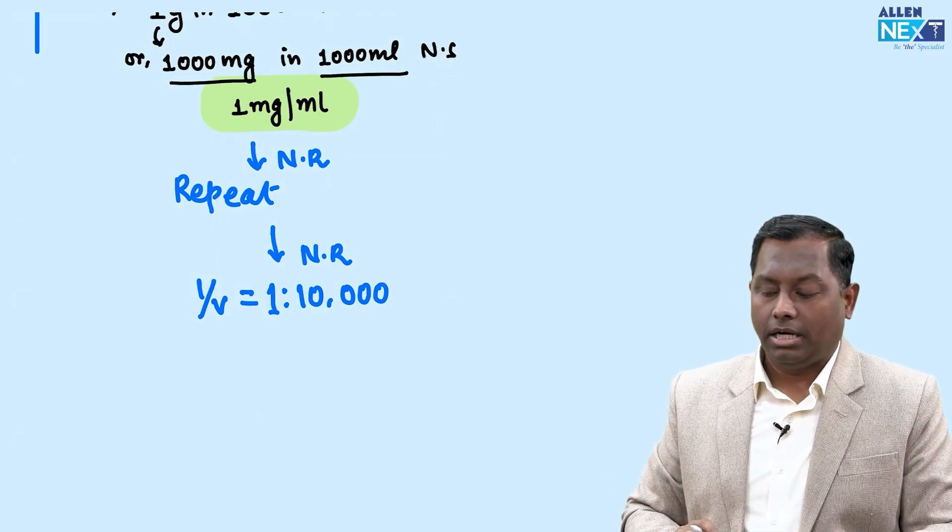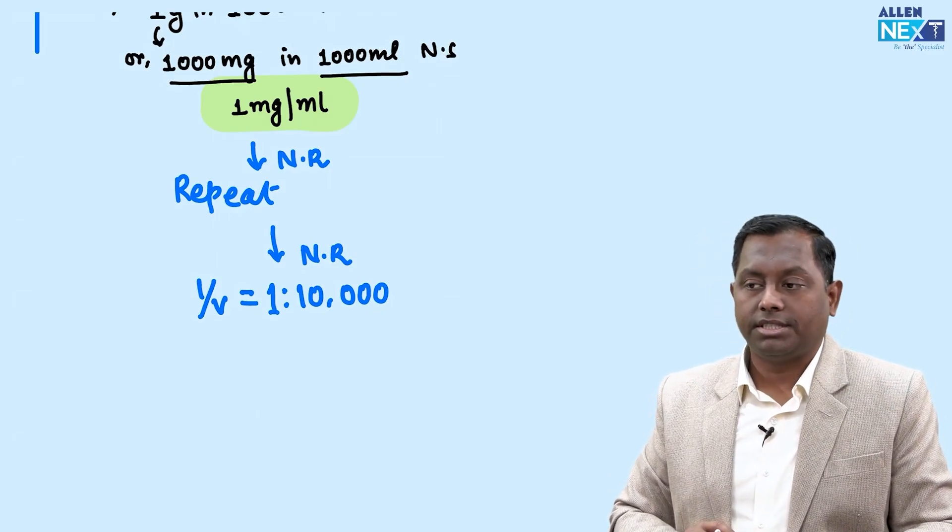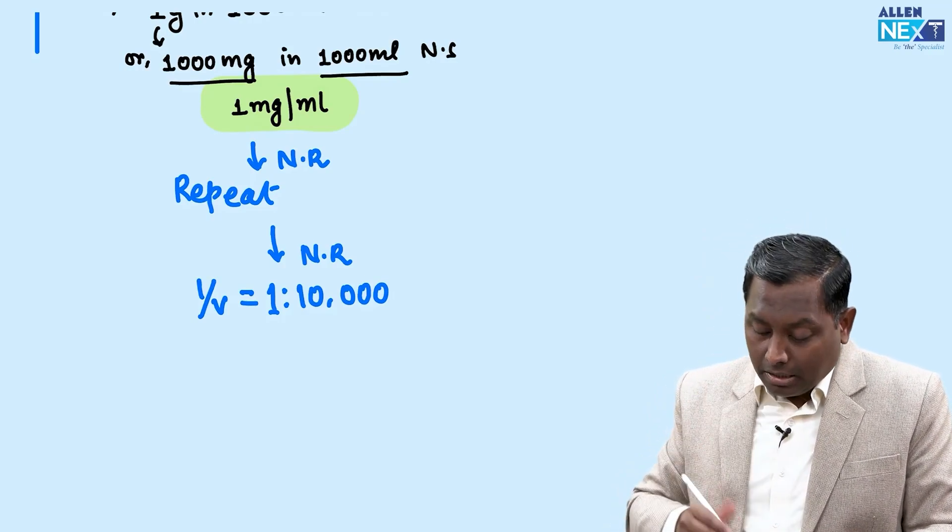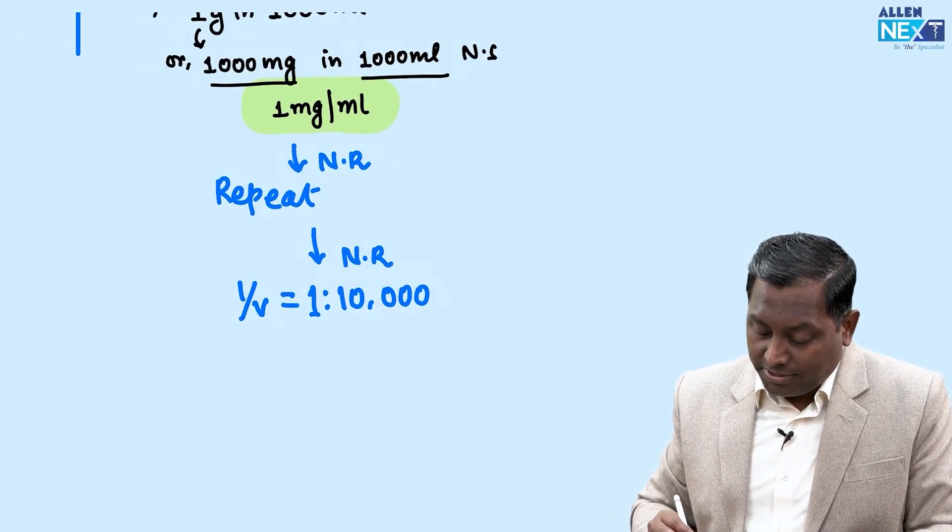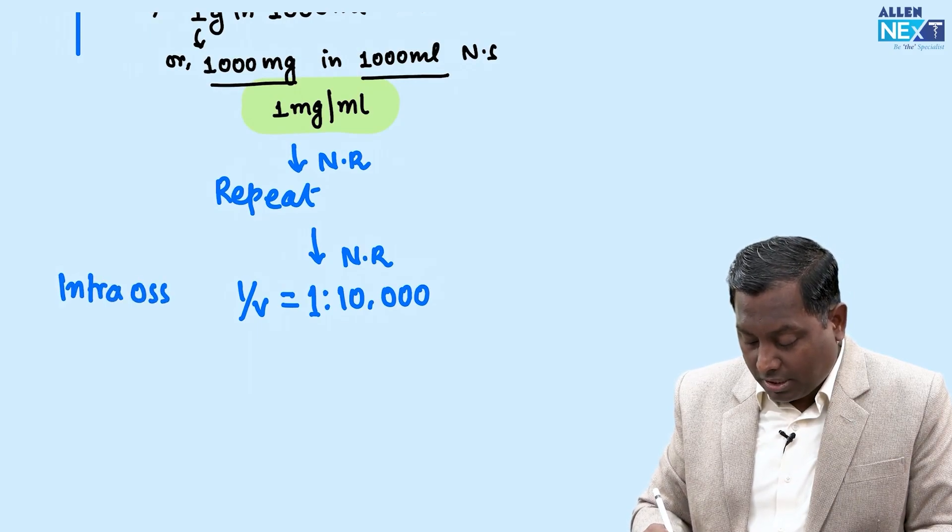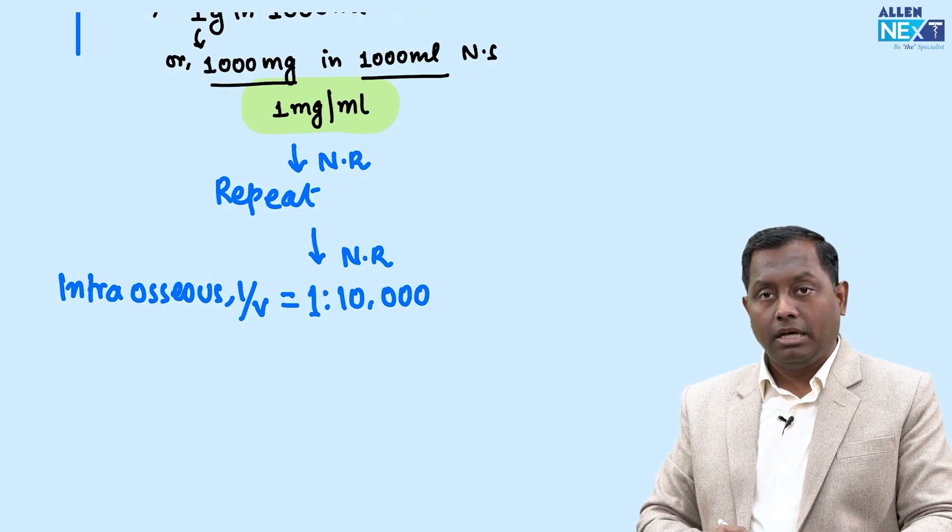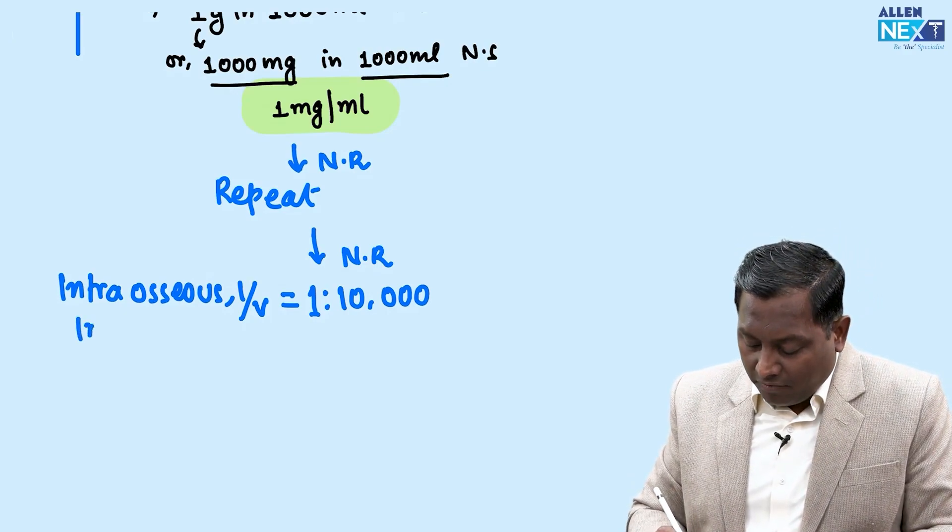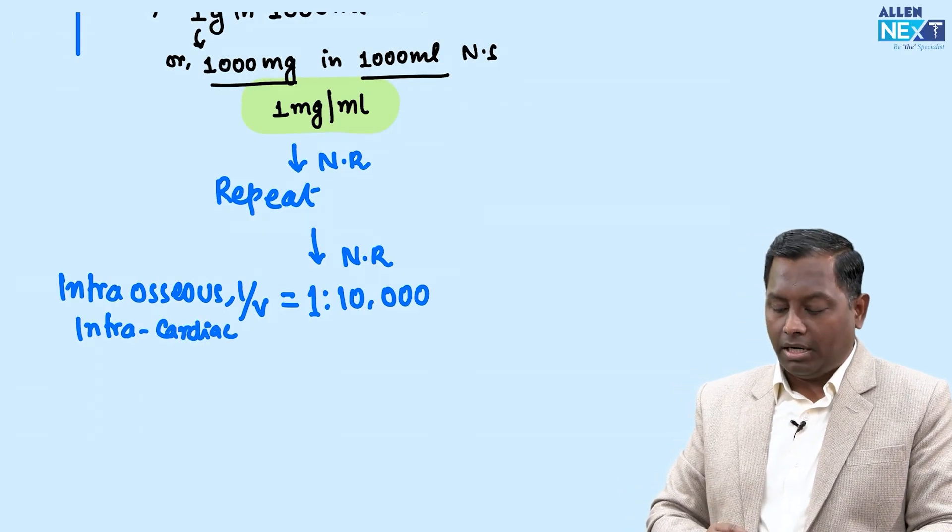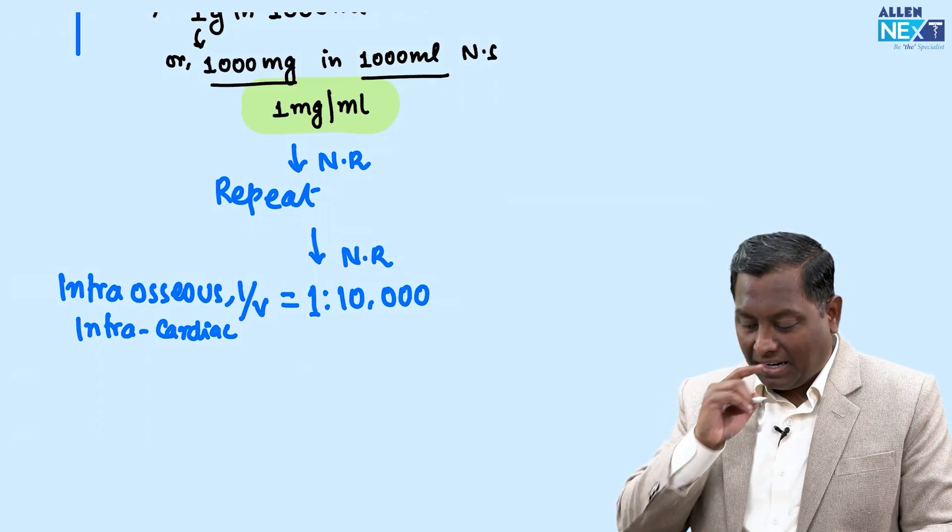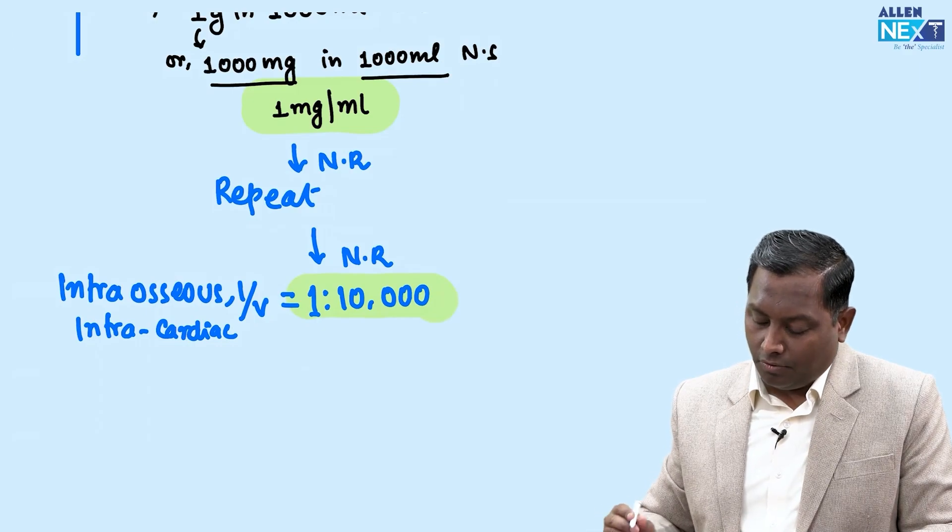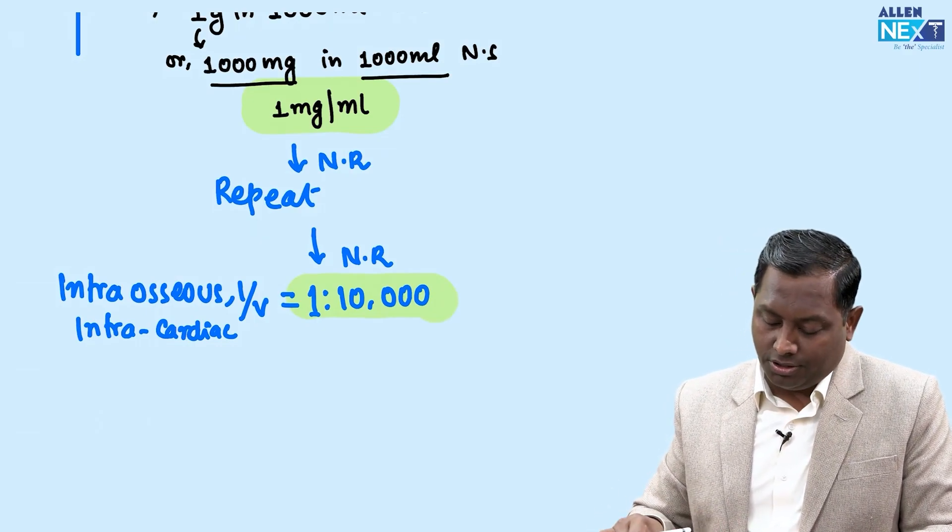If you cannot access IV route, according to recent ACLS guidelines, you can go for intraosseous in the same dose - you can give via bone. We can also give via intracardiac as the last resort. Always remember, 1:1000 is given IM or intracardiac or intraosseous.